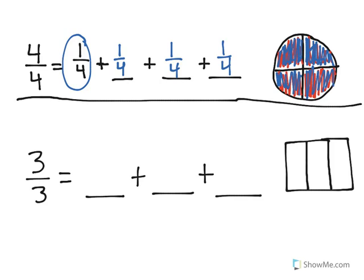So as we can see, 4 fourths is equal to 1 fourth, plus 1 fourth, plus 1 fourth, plus 1 fourth.